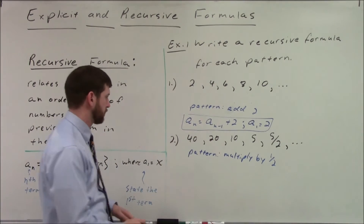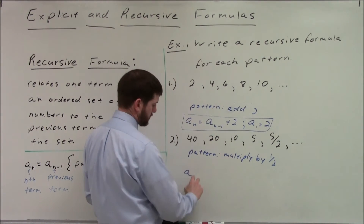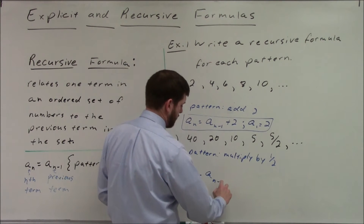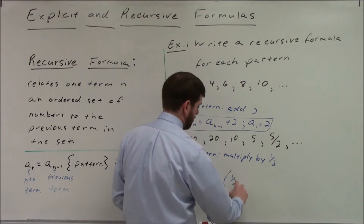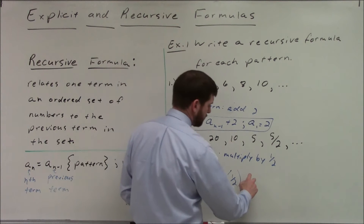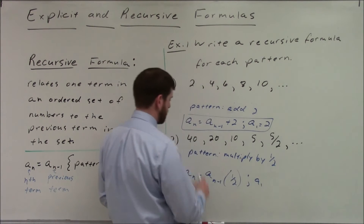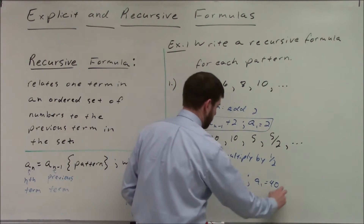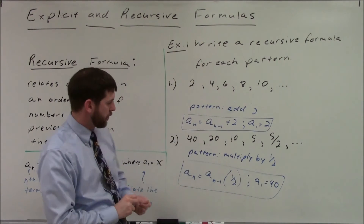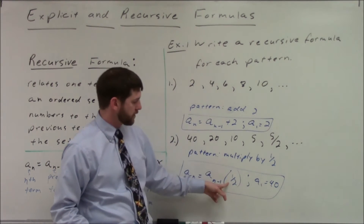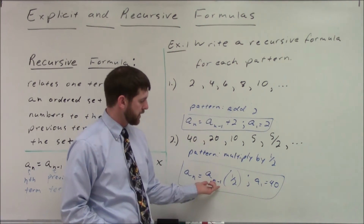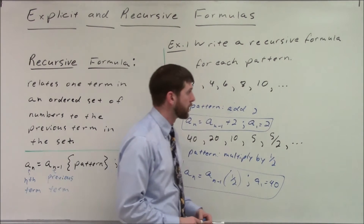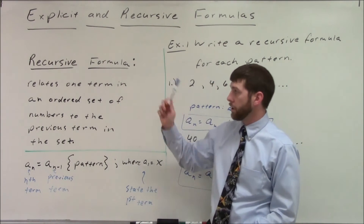So our pattern is multiply by 1 half, and we write it as a recursive formula. To get any term, I take the term before it and multiply it by 1 half, remembering to start at 40. So somebody can look at that and say: start at 40 and multiply every single number by 1 half, because the previous term times 1 half gives us the next term. That's recursive formulas.